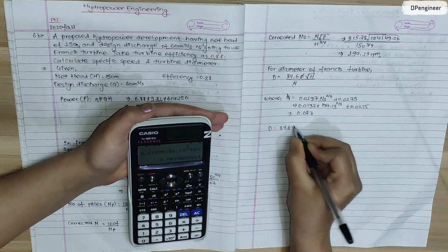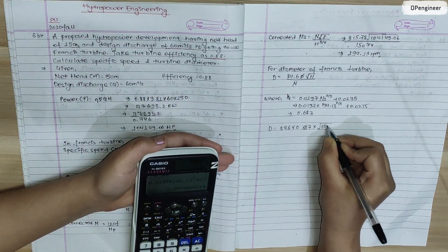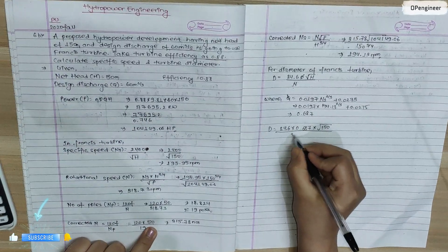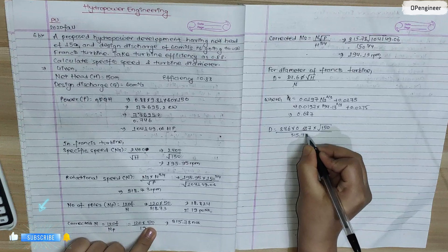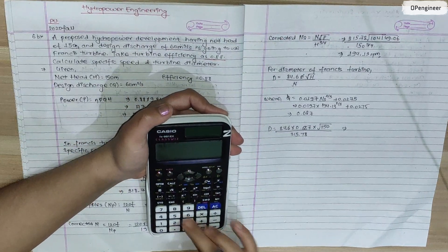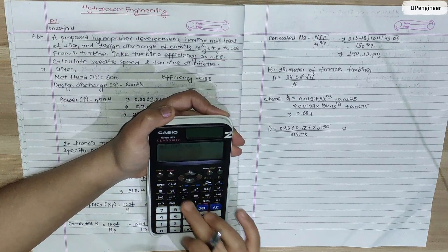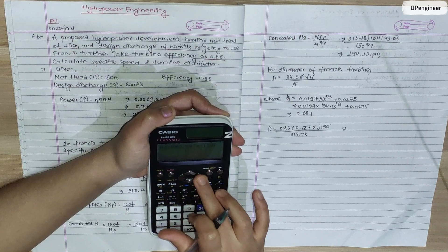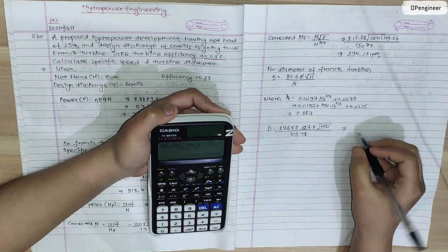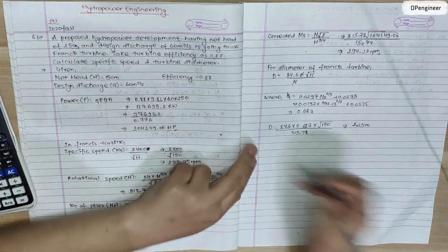We calculate 84.6 into phi 0.687 into root over 150 by 315.78. Calculate 84.6 into 0.687 into root over 150 by 315.78 equals 2.25 meters. So turbine diameter is 2.25 meters.